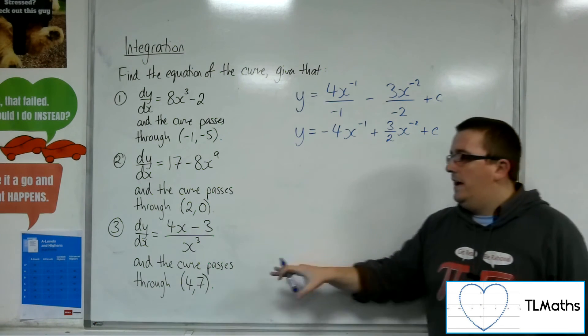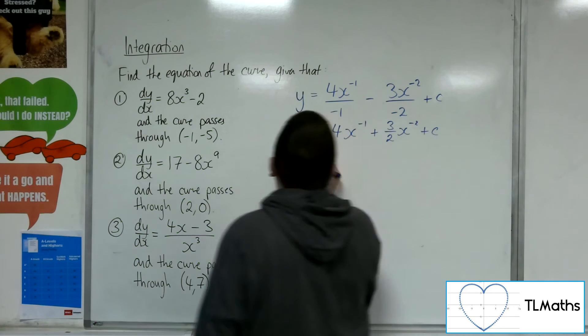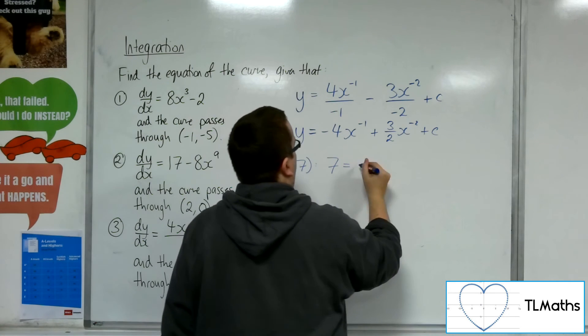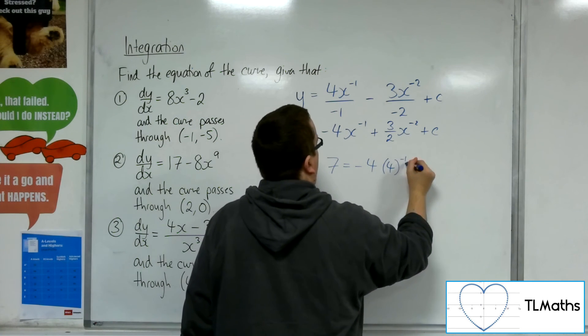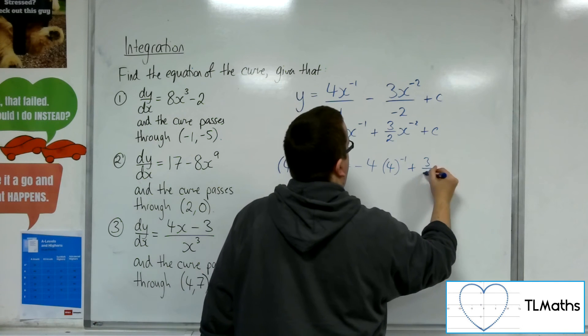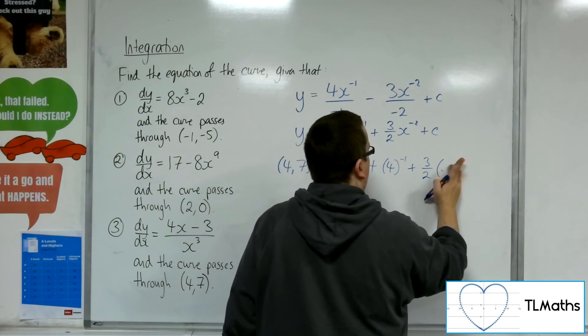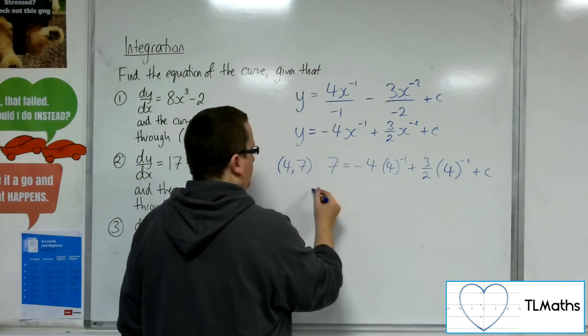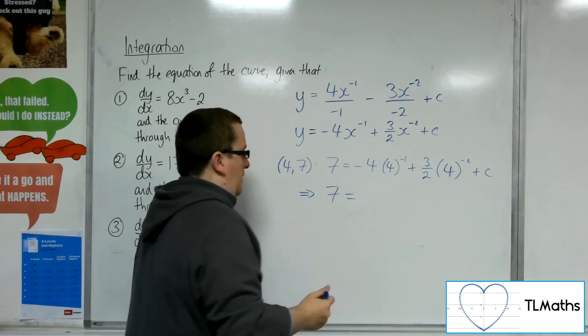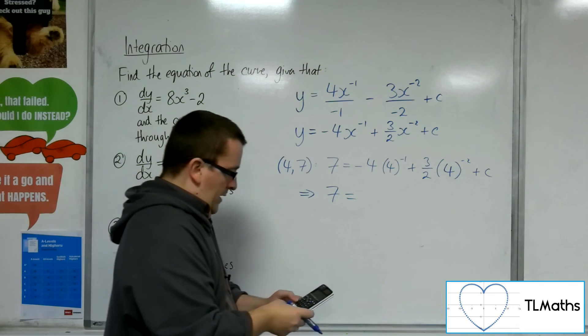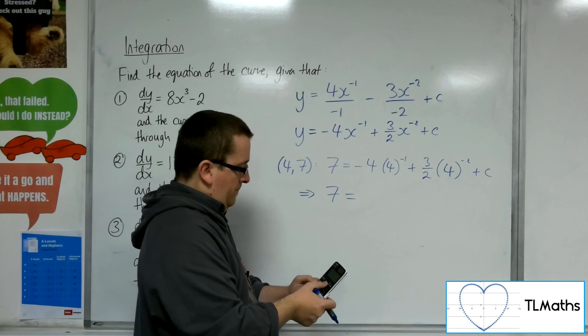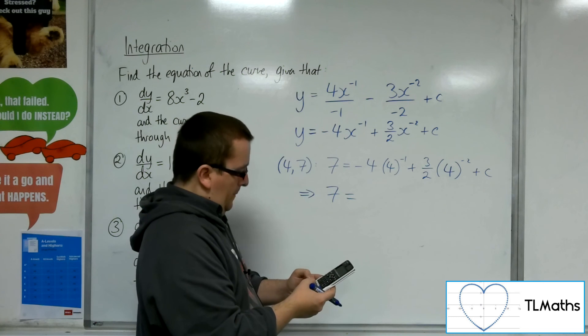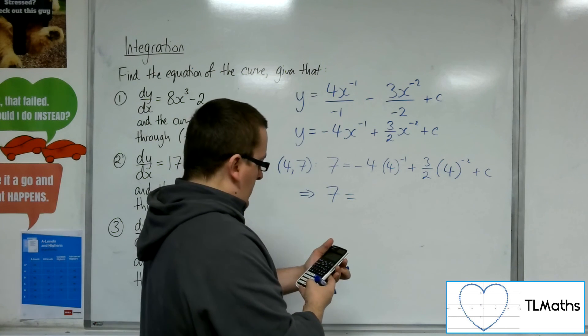Now I know that this curve passes through (4, 7). So I'm going to substitute in 4, 7. So y is 7. And we have -4 times 4⁻¹ + 3/2 times, not -4, just 4⁻² + c. So -4 times 4⁻¹ + 3/2 times 4⁻². And that's